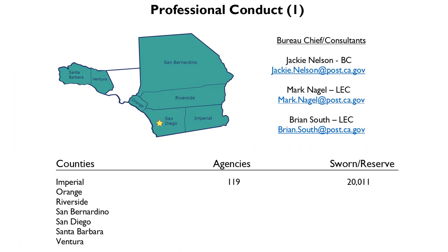Professional conduct bureau one covers seven counties with 119 agencies and a sworn and reserve population of a little over 20,000. I've listed the names and emails of the bureau chief and consultants assigned to this district. If you're assigned to this district, please note my email and Brian South's email, and send us an email with your contact information for future reference.